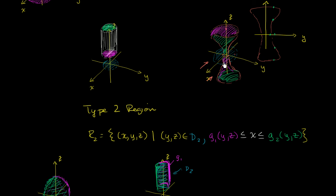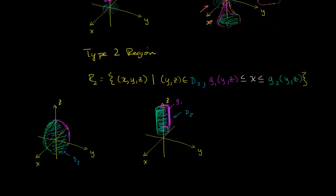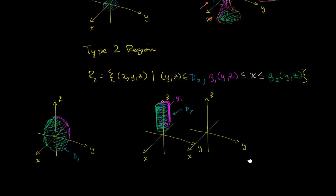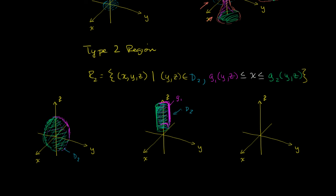What about this hourglass shape that could not be a type 1 region — can it be a type 2 region? Well, let's think about it. Our domain should be in the y,z plane if we want to think of it as a type 2 region. So our domain could be this flat hourglass shape in the y,z plane.